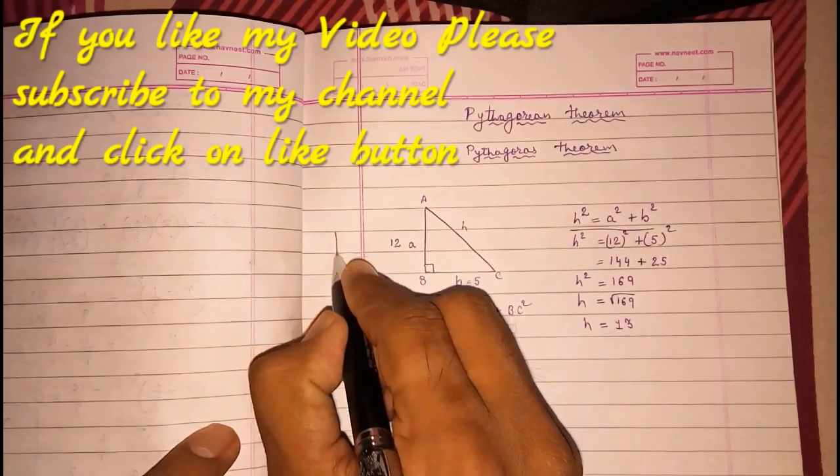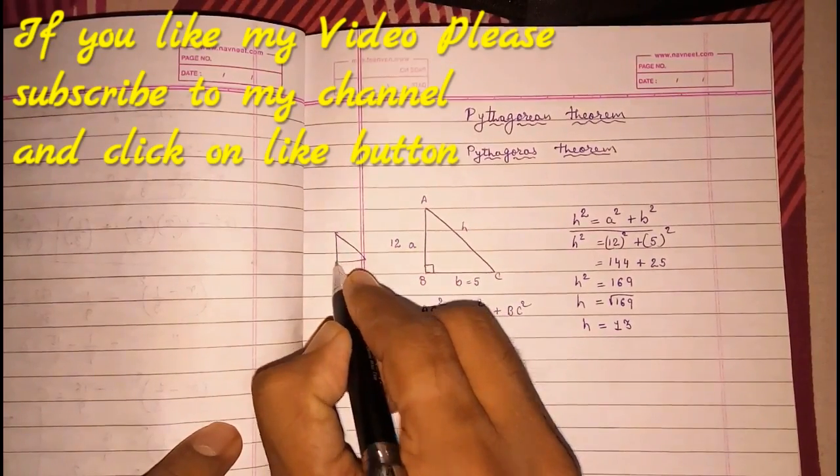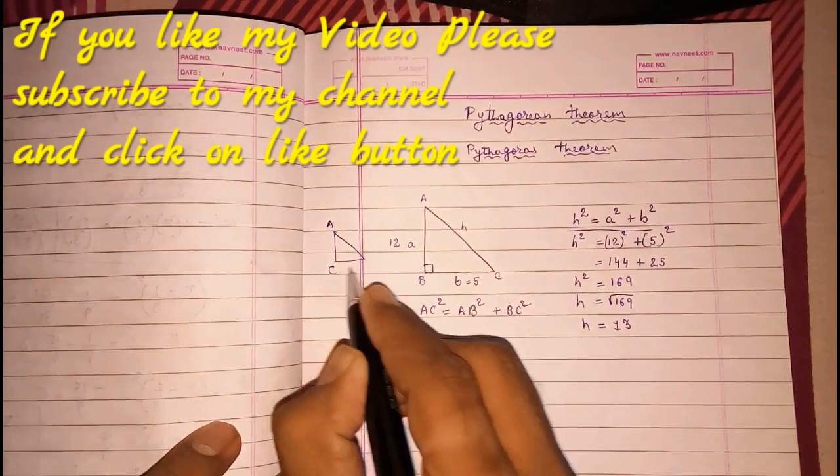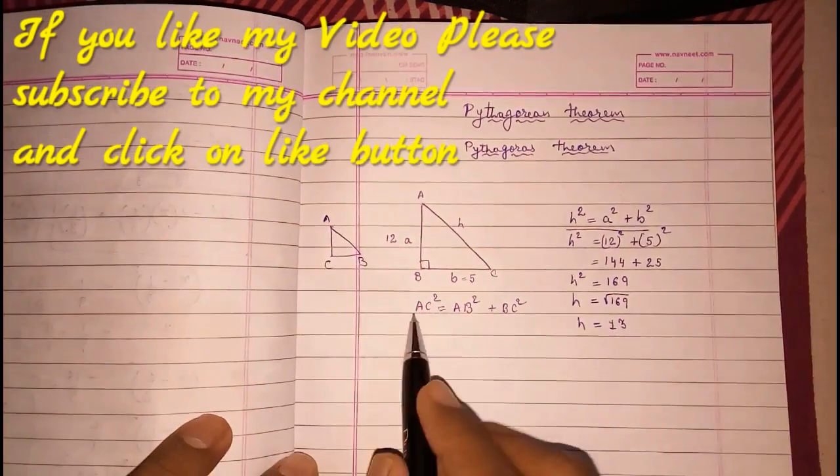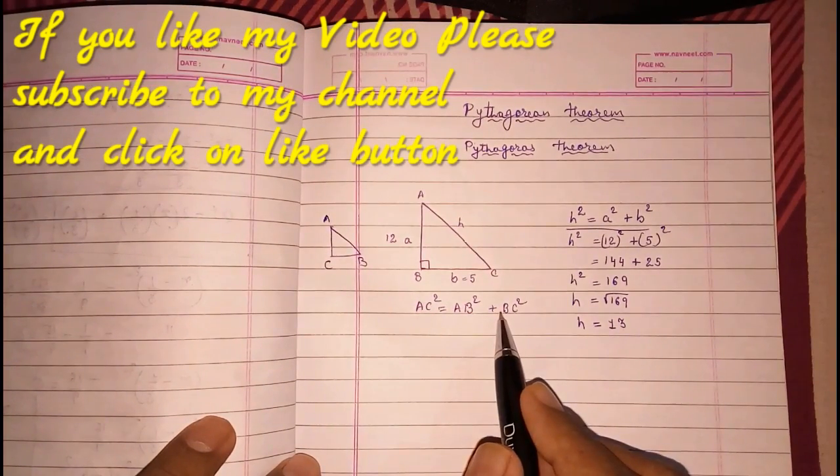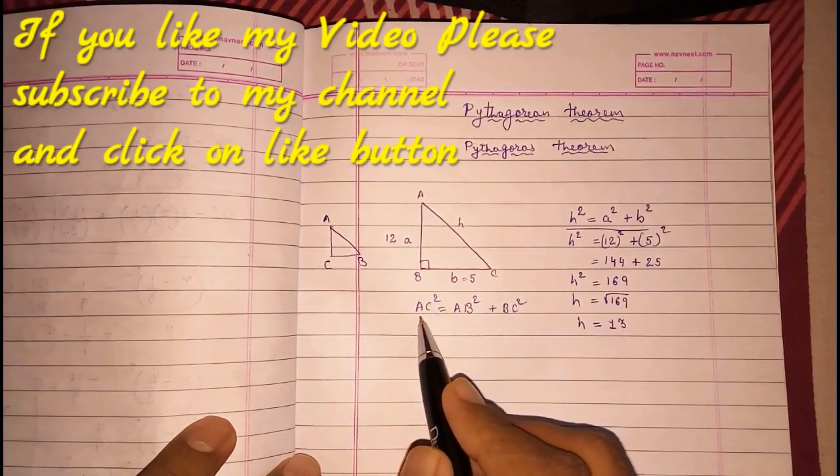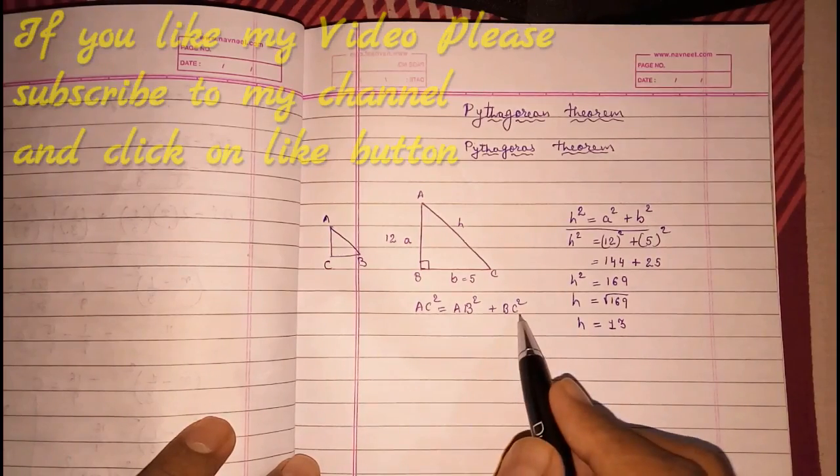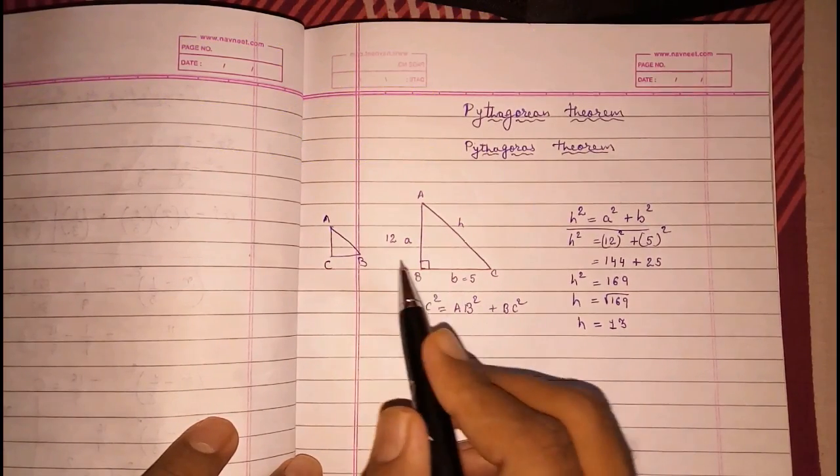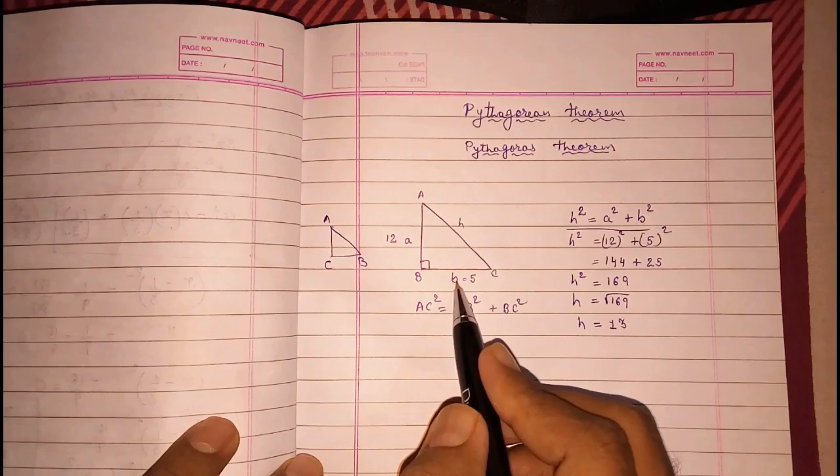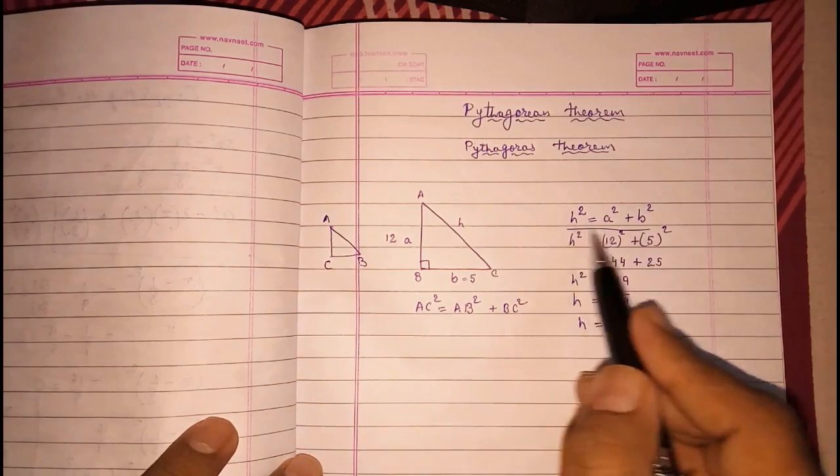But every time they will not give this A, this B, and this C. Sometimes they will give like this also. Look here, I am drawing a rough figure here. And they will tell right angle at C. At that time this formula will not work, but students generally think AC² = AB². So they will mug up this. That's why I had used H, A, and B.